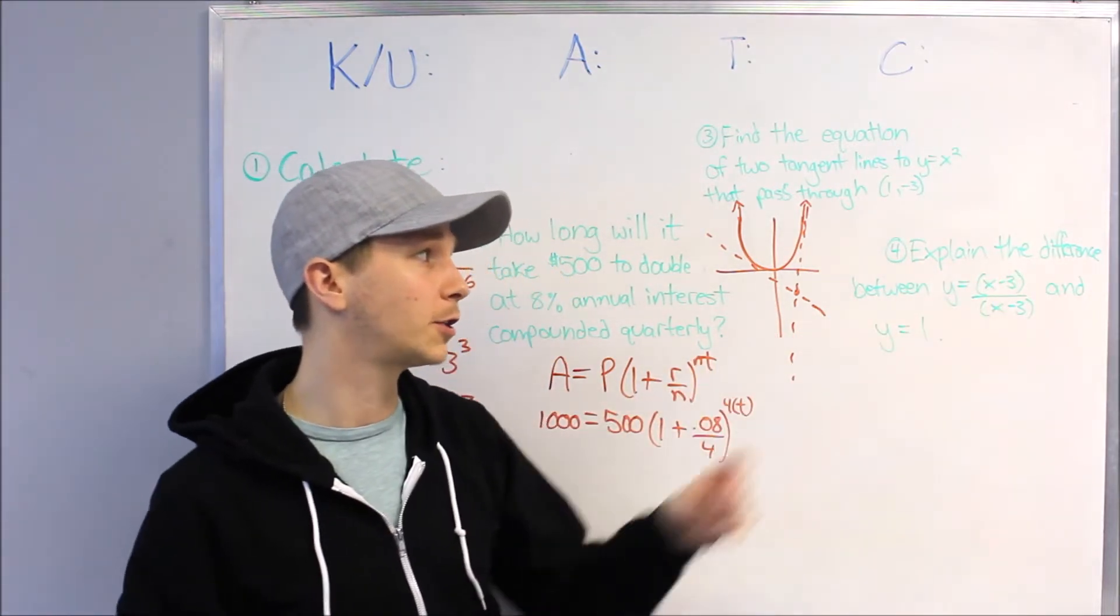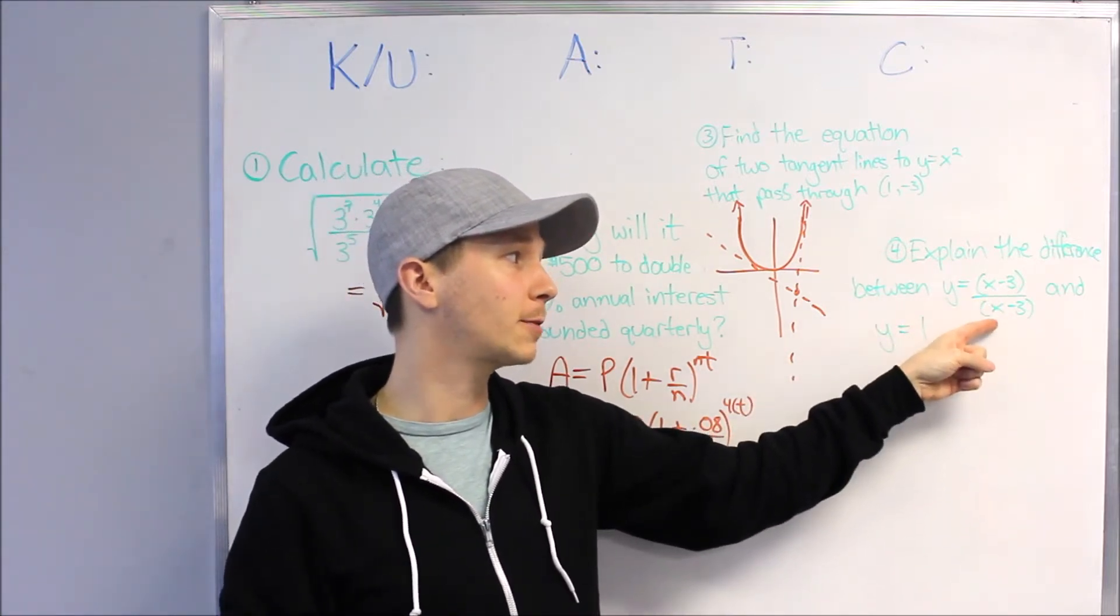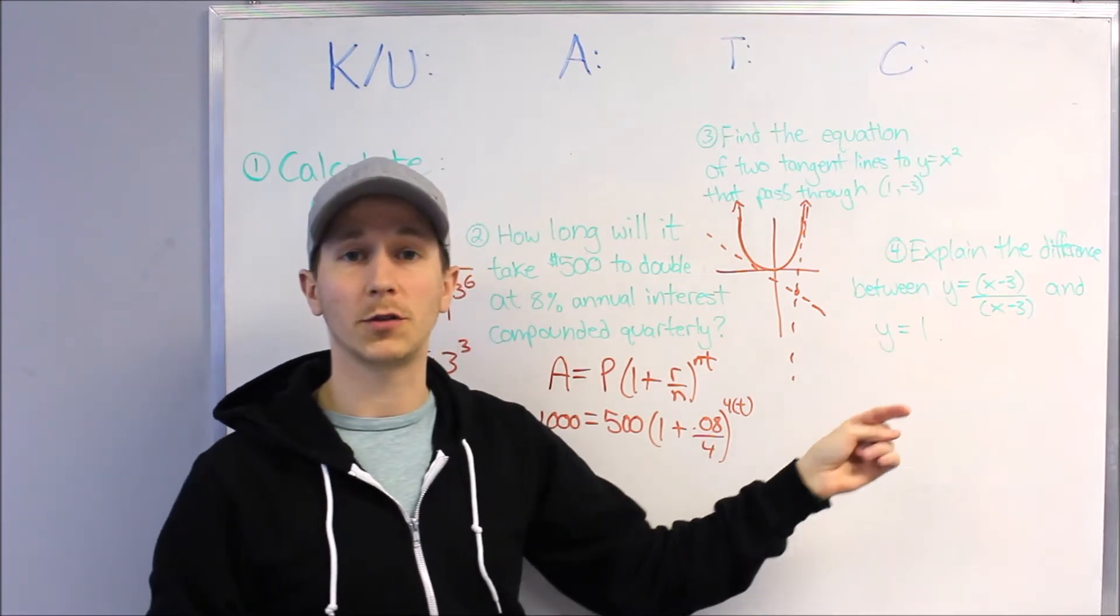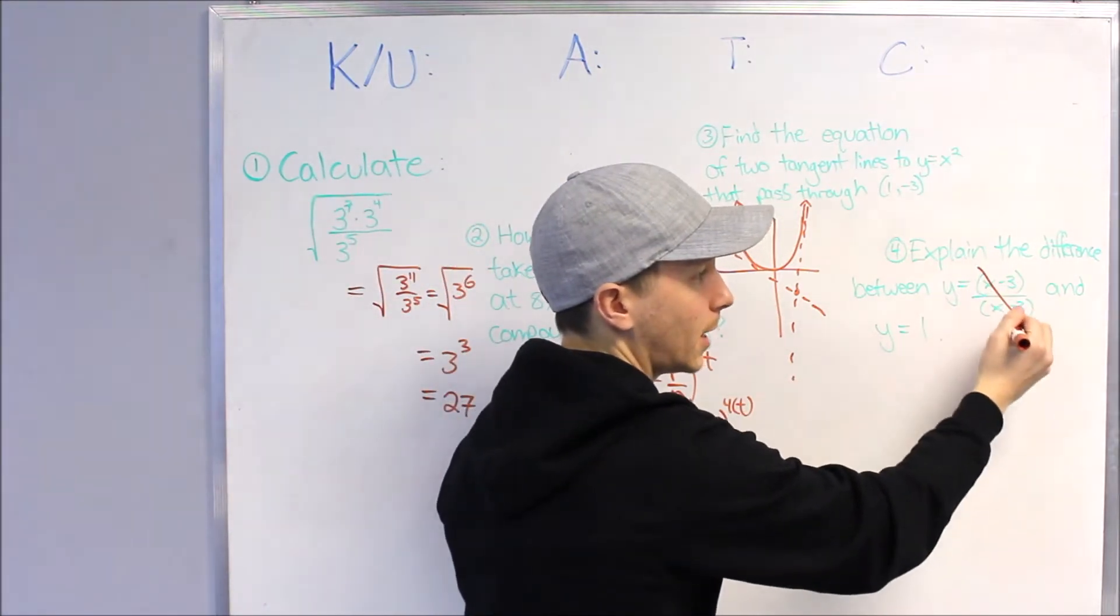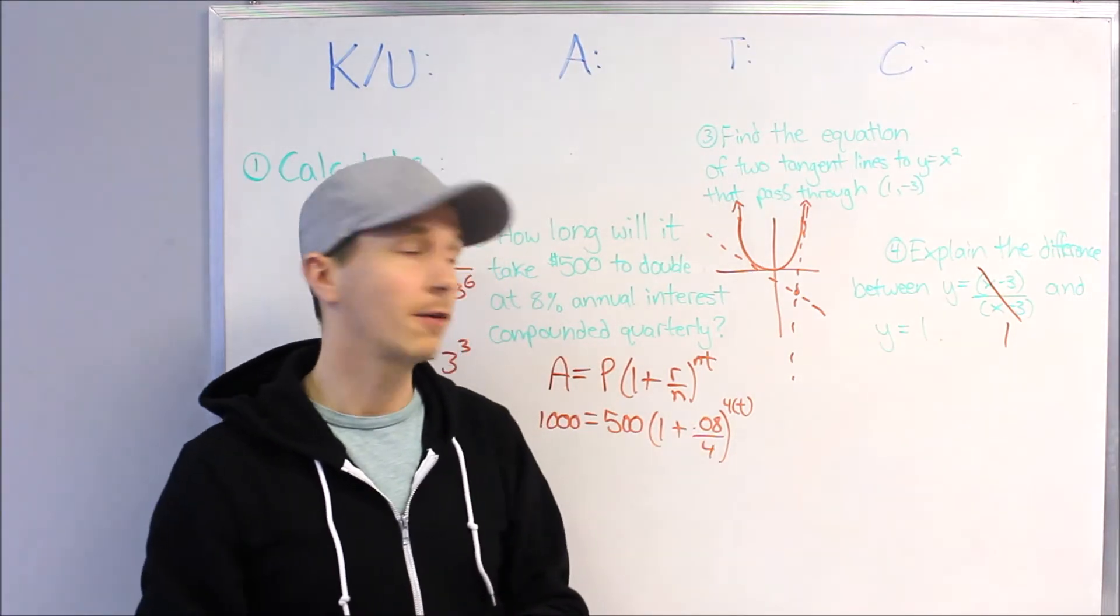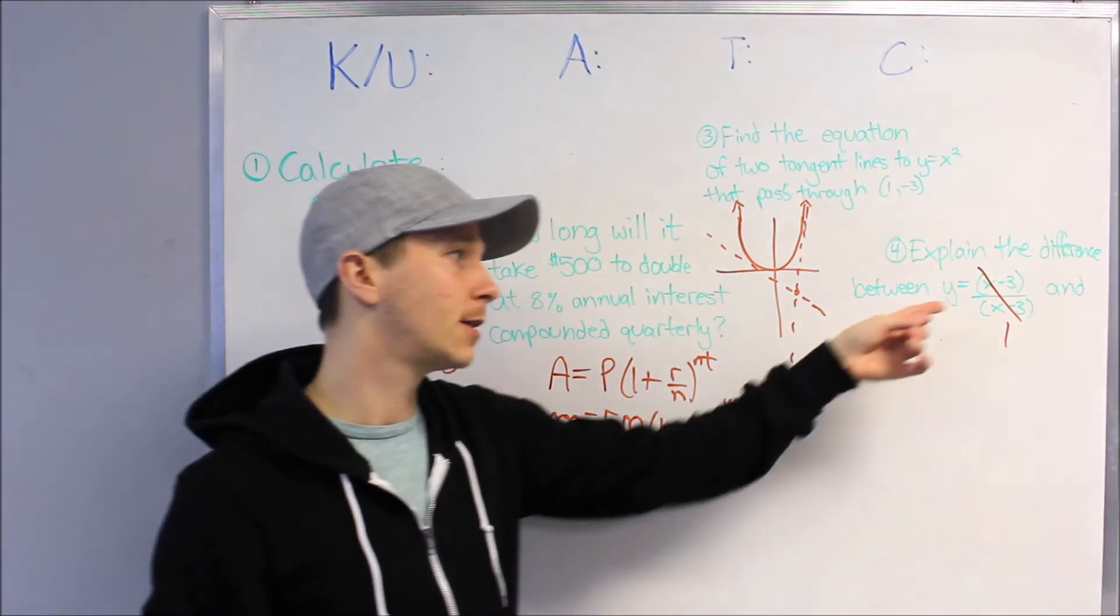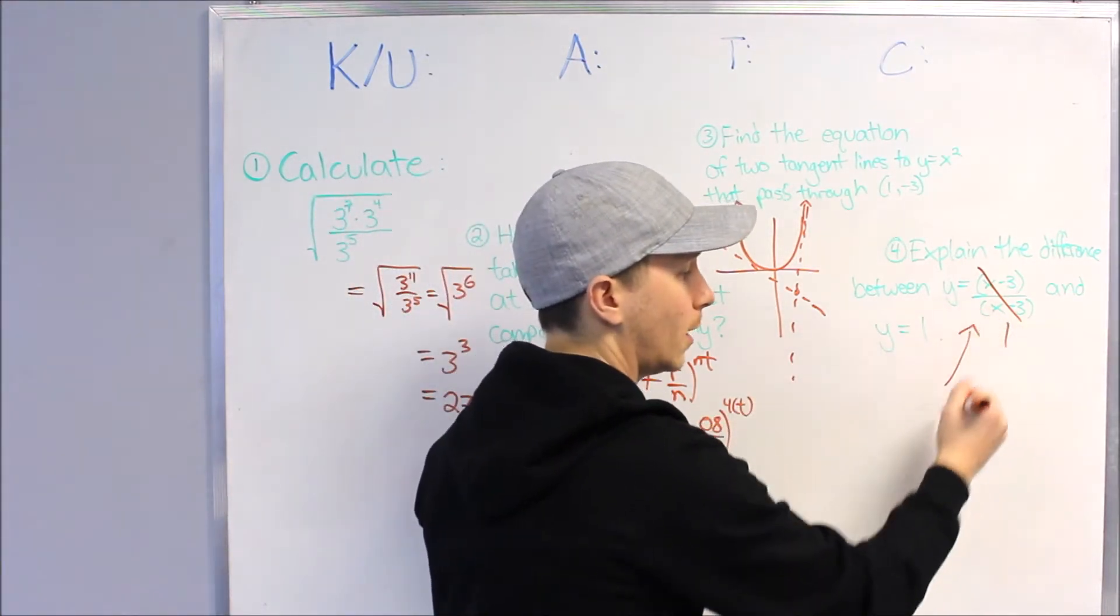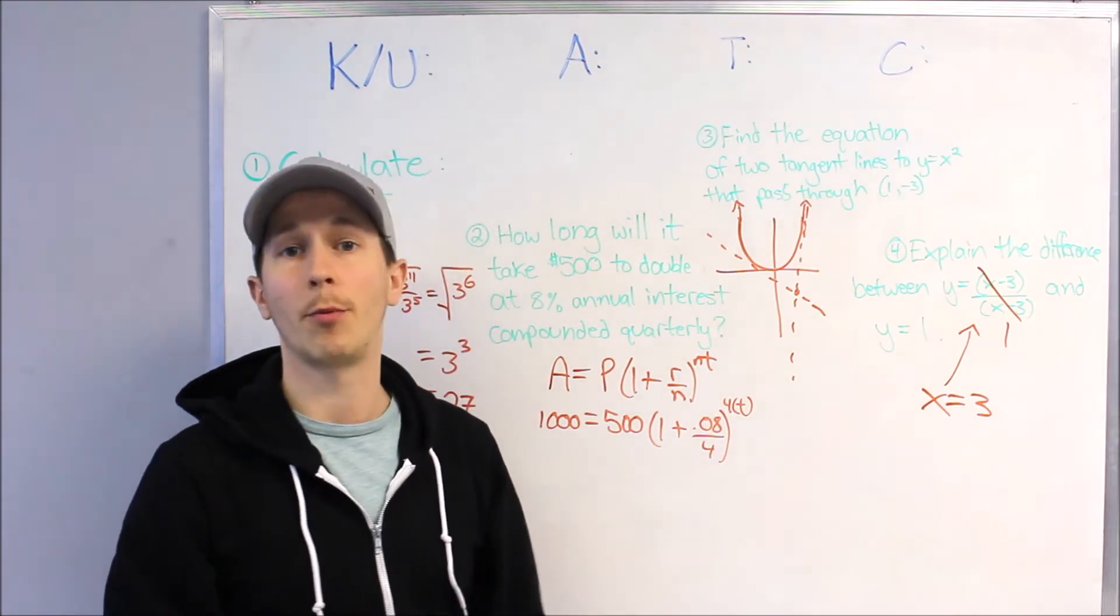But an example of a core communication question would be explaining the difference between y equals (x minus 3) over (x minus 3) and y equals 1. These kind of look the same because x minus 3 over x minus 3 we can cancel those and it equals 1, something divided by itself is 1. But these are not quite the same graphs because the domain of this initial one, x cannot be 3, so there's actually going to be a hole at the point (3, 1).